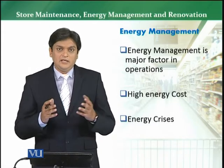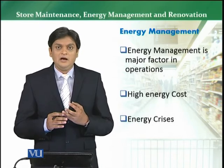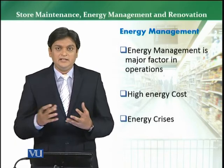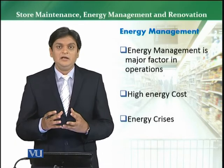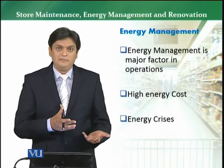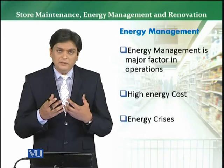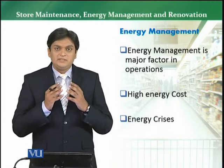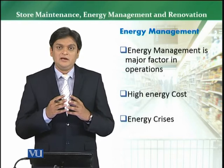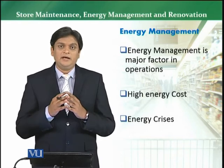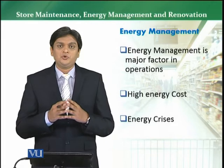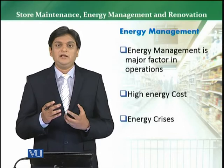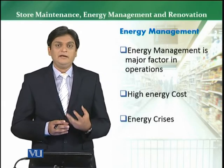For example, tamam retail stores mein — even ghar ke andar bhi — agar energy crisis ho, bijli nahi aa rahi 2 ghante, 1 ghanta, 3 ghante, 4 ghante — if light is not available, you go for inverter, UPS, ya generator. So retailer has to do the same planning — usko dekhna hai ke agar kisi time energy ka shortfall hai, to how he has to ensure ke woh energy level maintain rakh sakta hai, electricity ko maintain rakh sakta hai.